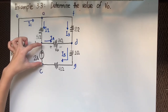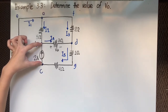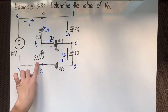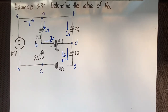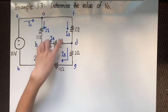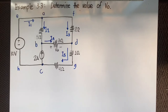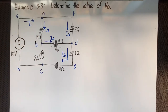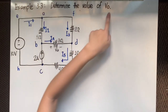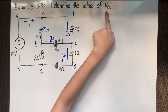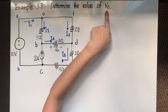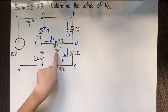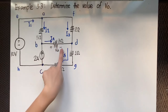We don't need to assume a current direction for the current source branch because the 2-ampere current is already given. That reduces our unknowns — we're now solving for 5 unknown branch currents, so we need 5 equations. The problem asks us to find V sub O, which is written across the 3-ohm resistor with positive and negative terminals shown.